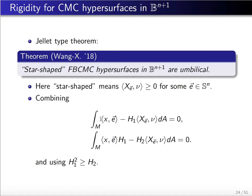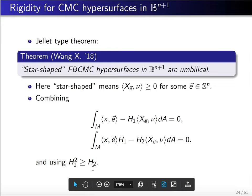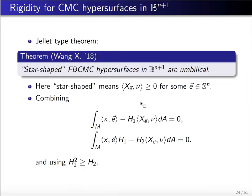Combining the previous Minkowski-type formulas — the first and the second — and using the star-shapedness condition together with the Cauchy-Schwarz inequality, that is H₁² is greater than or equal to H₂, one can easily obtain this Jellet-type result.